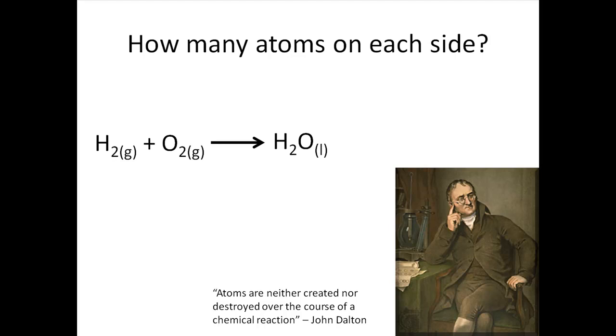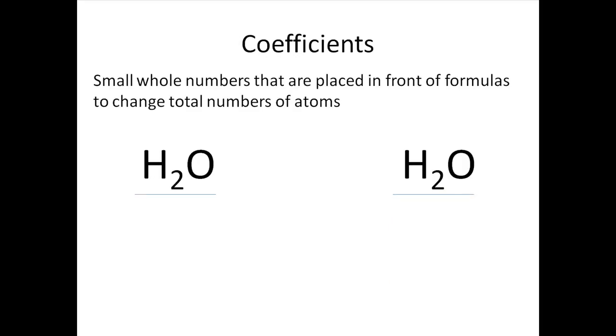Let's count the numbers of atoms on each side of this equation. On the left side of our skeleton equation, we have two hydrogen atoms and two oxygen atoms. This comes from the fact that we have one diatomic hydrogen molecule and one diatomic oxygen molecule. On the right side, we have one water molecule that has two hydrogen atoms and one oxygen atom. Clearly, this reaction is not following Mr. Dalton's rule. As written, we are actually destroying an oxygen atom.